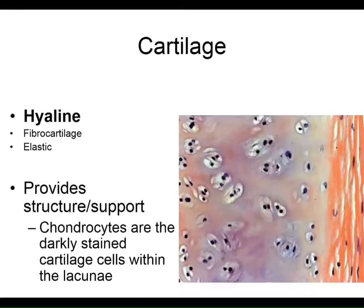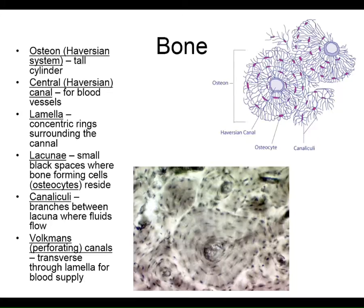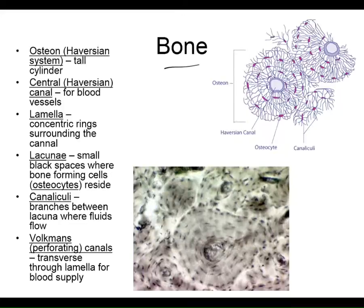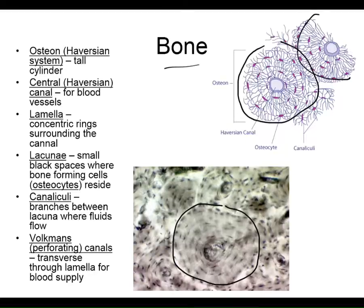The fourth connective tissue is bone. Next week is our skeletal lab, but since we'll be busy learning about 190 bones in the body, we're going to look at bone histology now rather than next week. There are six structures I want you to know about bone micro-anatomy — that's number five on the quiz. When you slice through bone, what you see might remind you of tree trunk rings — and there's a reason: bone does grow bigger in diameter.